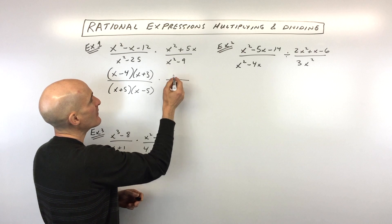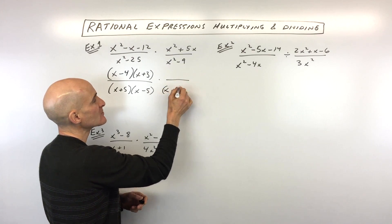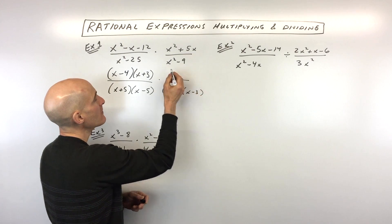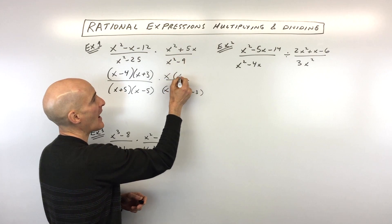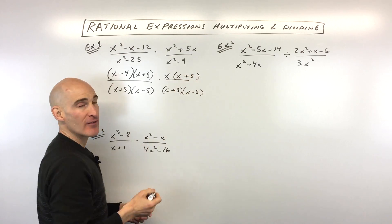Same thing over here. This denominator is a difference of two squares. That's x plus 3, x minus 3. And then the numerator, really all we can do here is factor out the greatest common factor. We can divide these both by x, and so we've got it factored.